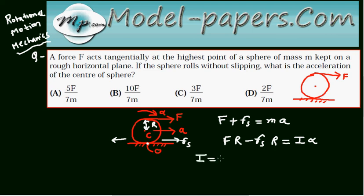We know that I is 2/5 M R squared, and alpha equals A/R. This is valid for pure rolling motion.